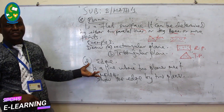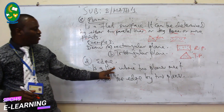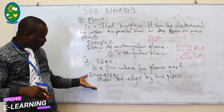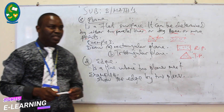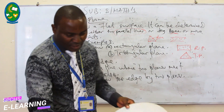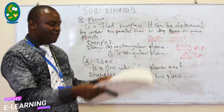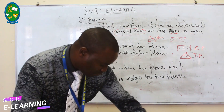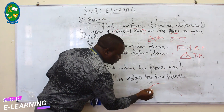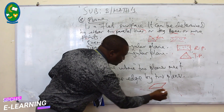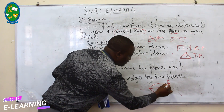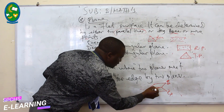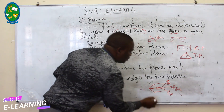Another term is edge. An edge is a line where two planes meet. To show an edge by two planes: if you take two planes and join them, the line where they meet is known as the edge — the first plane and the second plane form this edge where they intersect.